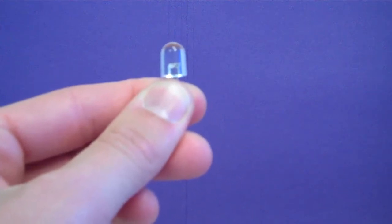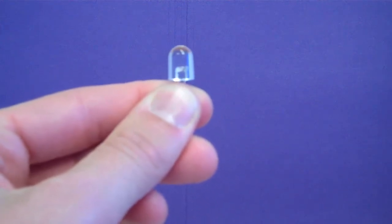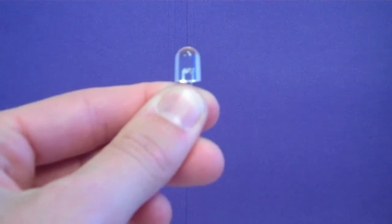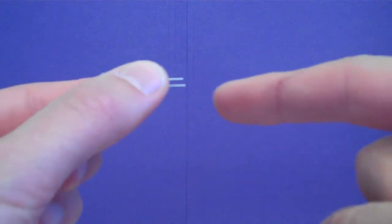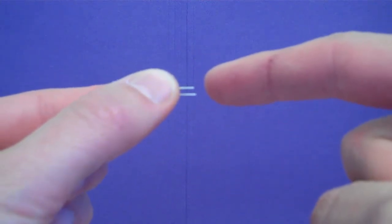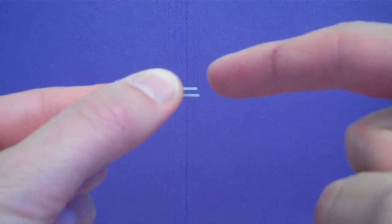Here is an easy method of mounting a 10 millimeter LED to a front panel. Take the 10 millimeter LED and trim the leads to a little over half inch.